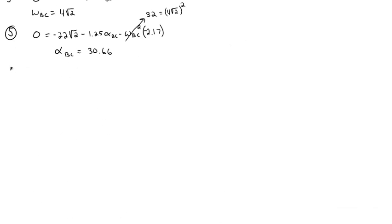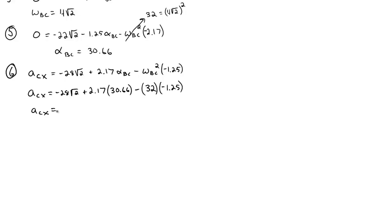For our sixth and final step, we'll put the value for alpha_BC into the I direction from the relative acceleration equation from step three. By substituting the values for alpha_BC into this equation, we end up with the result of 66.9, and our units on this problem are feet per second squared for acceleration.